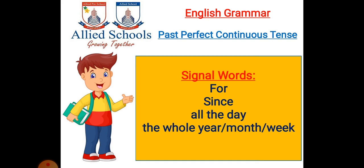There are some signal words used in Past Perfect Continuous Tense: For, Since, All the Day, The Whole Year, The Whole Month, The Whole Week.